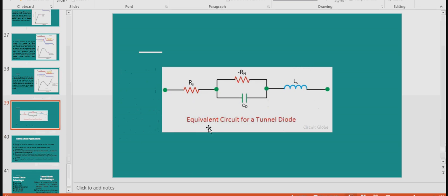This is the equivalent circuit of your tunnel diode. It has some series resistance and parallel combination of negative resistance and diffusion capacitance and series inductance.